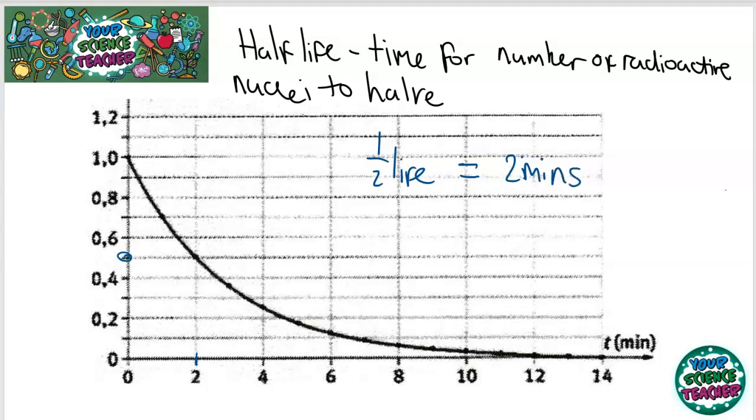So the half-life of this isotope would be two minutes. And the half-life is constant. Look, for it to half again and go from 0.5,000 to 0.25,000, for it to do that, it takes another two minutes. So it's constant, the half-life.